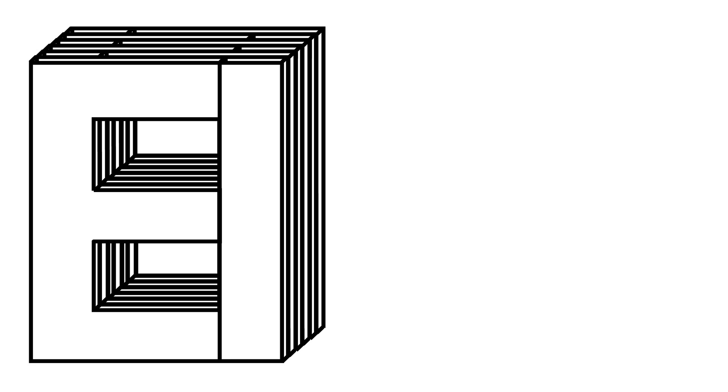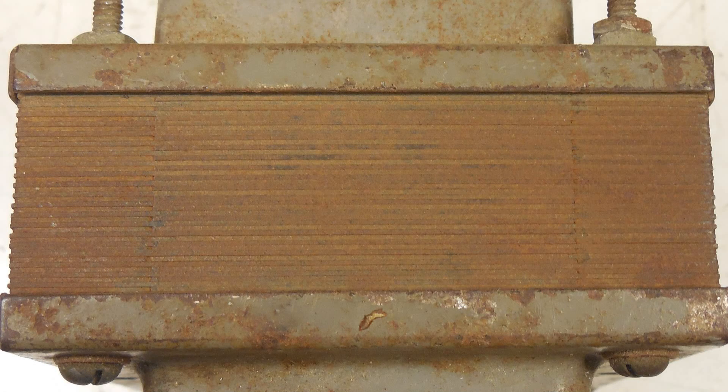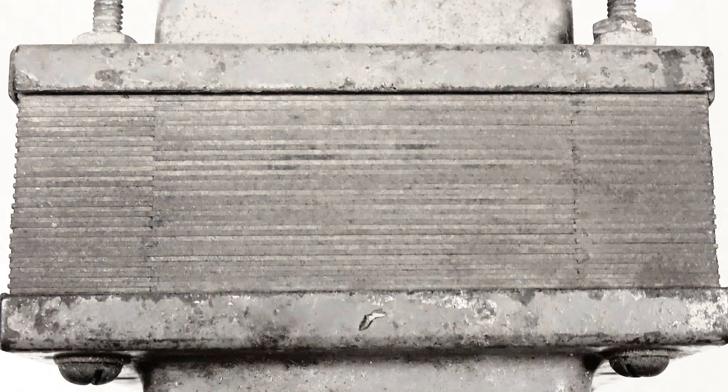All these laminations are insulated from each other with a varnish coating or some other type of insulating material. What that does is it reduces the eddy currents and makes the transformer much more efficient. Here's another look at the completed core for this power transformer. I'll convert to black and white and it makes it easier to see how this core was constructed. Notice the thickness of the laminations.